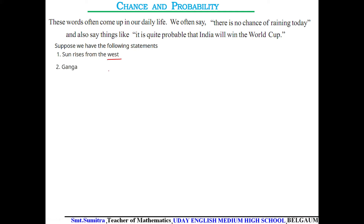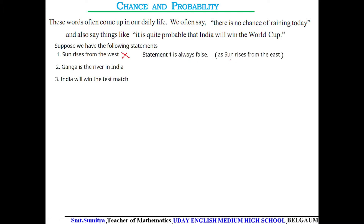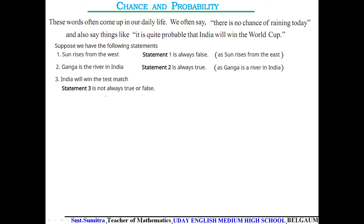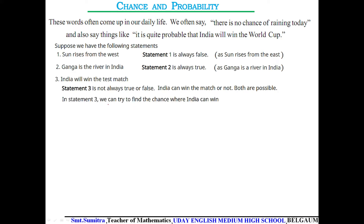Consider these statements: 'Sun rises from the West', 'Ganga is a river in India', and 'India will win the test match.' Statement one is always false because the sun rises from the East. Statement two is always true. Statement three is not always true or false — India may win or may not win.